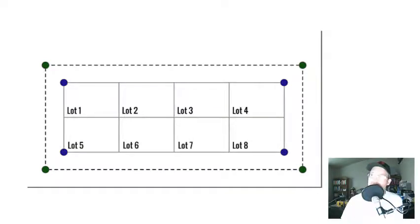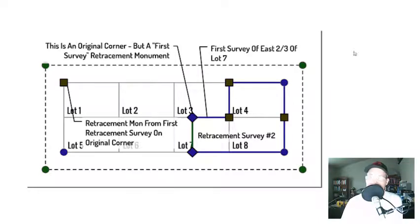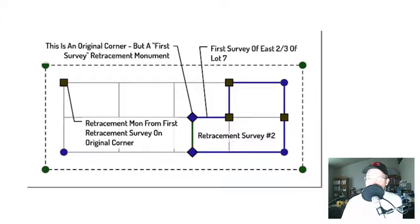Now let's make things more complicated. Ten years after retracement survey number one — so 40 years after the original subdivision — a second retracement survey is done for lot four, lot eight, and a portion of lot seven. Mr. Conno was deeded lot four, lot eight, and the east two-thirds of lot seven — that was by deed, not by map. Landon gets hired to survey Mr. Conno's parcel.